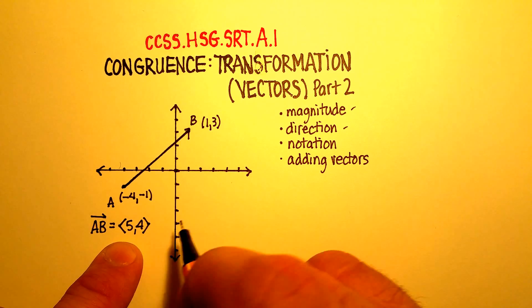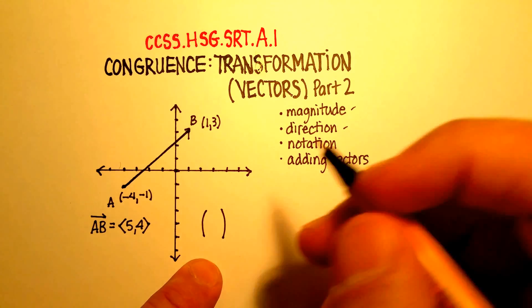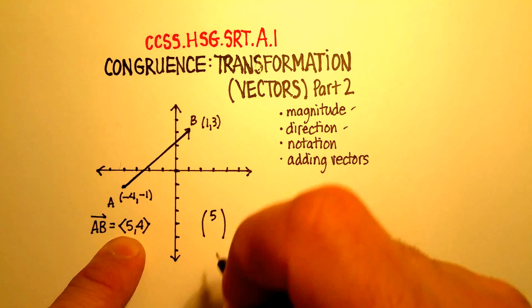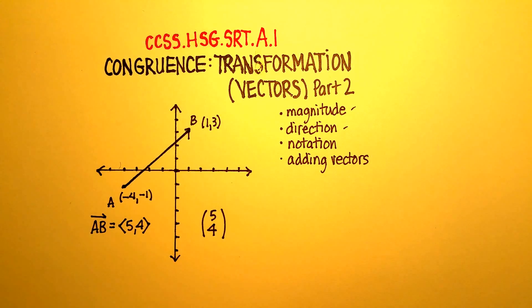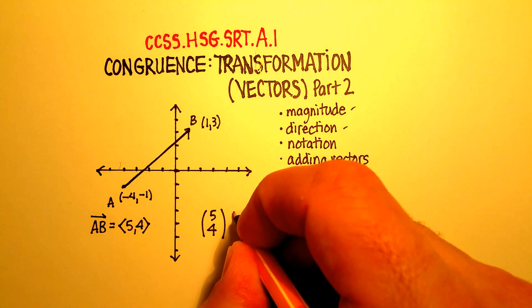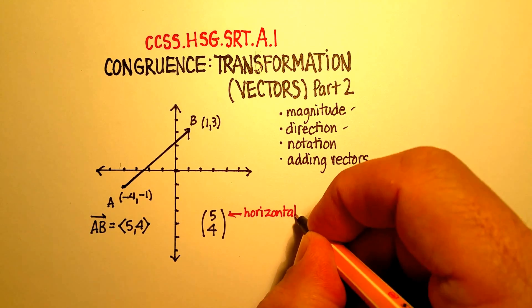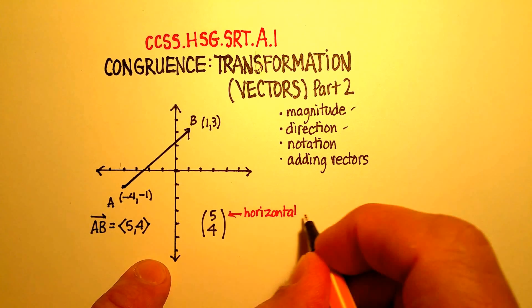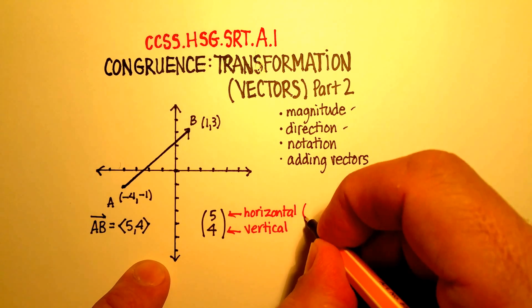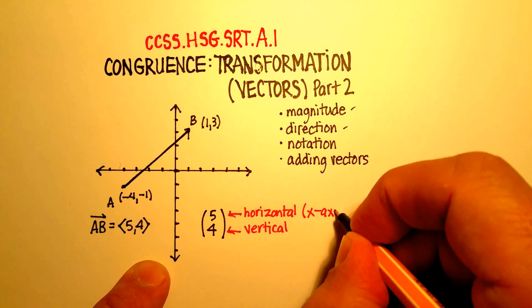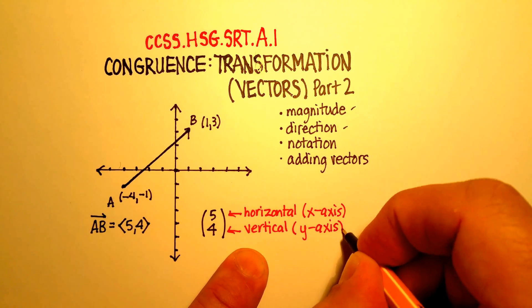Now again, this was called the component form, but there's another way of writing this. And it looks like this. So you have two large parentheses. And the horizontal component is the number on the top. And the vertical component is the number on the bottom. So again, we'll call this the horizontal movement. You don't want to call it component, because then you would mix it up with this one. But just call it the horizontal movement. And just call this one the vertical movement. Another way of thinking that is just the movement along the x-axis. And think of this as the movement along the y-axis.